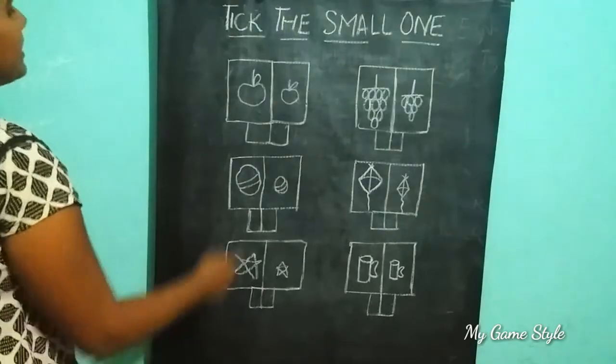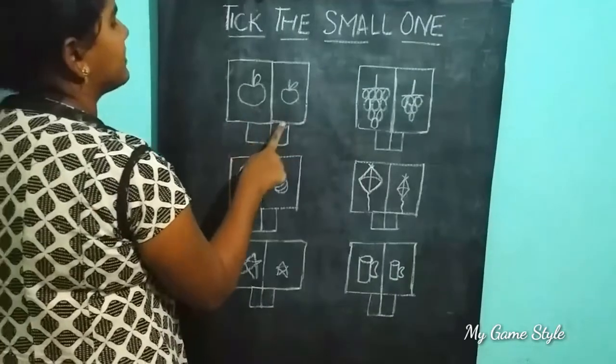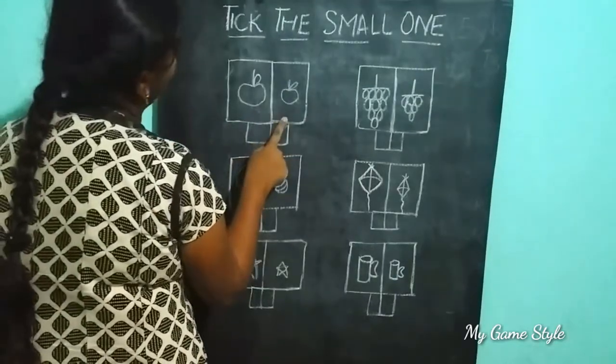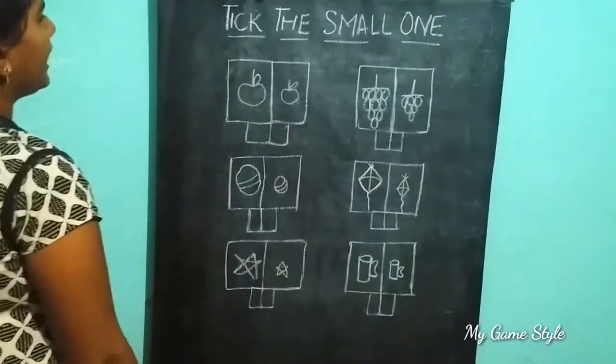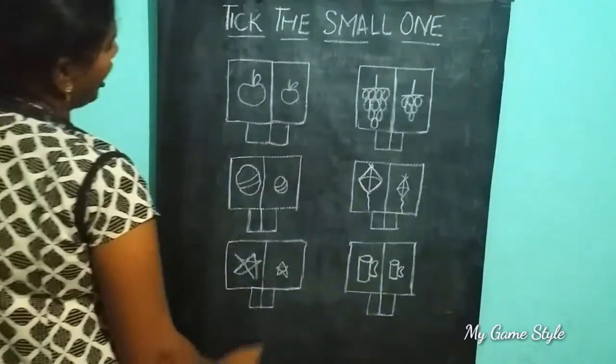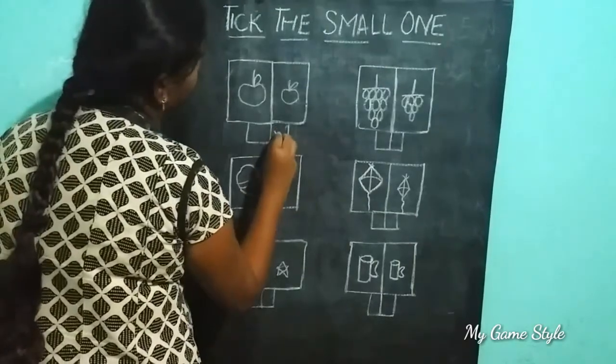This is a big apple. This is a small apple. So we need to tick the small one. This is a small one.